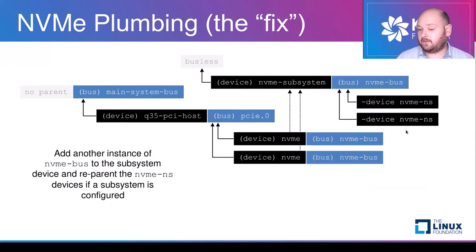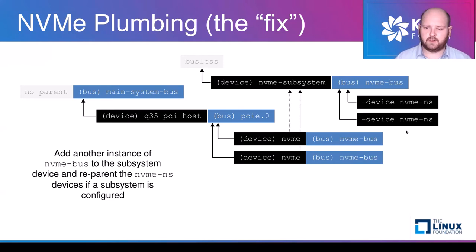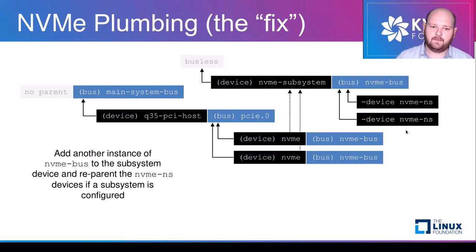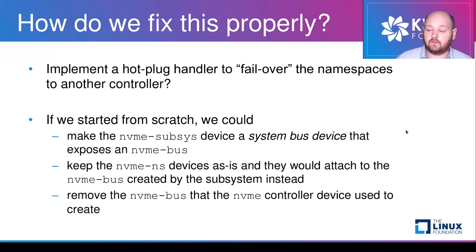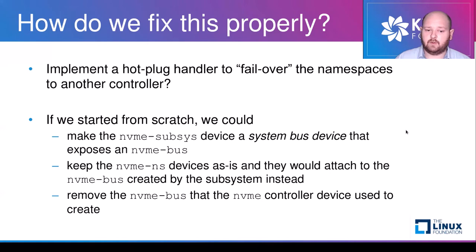We had to get a fix in for this, and we did. We added another NVMe bus on the subsystem to which namespaces were attached directly. This worked, but it wasn't really clean — because due to backward compatibility issues, we had to keep namespace devices attaching initially to the NVMe controller device, and then if a subsystem was attached, re-parent those namespace devices to the subsystem bus instead.